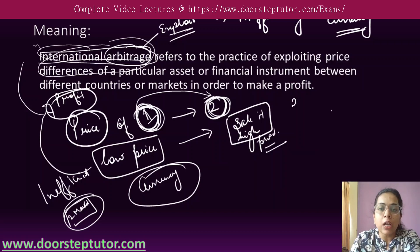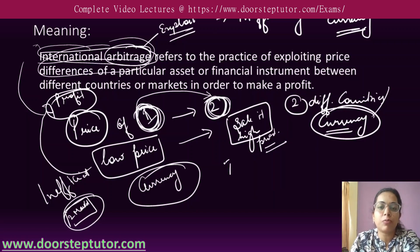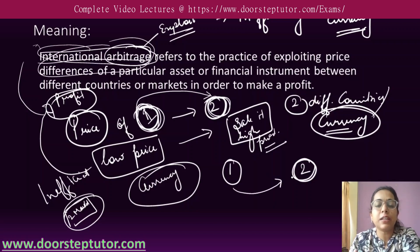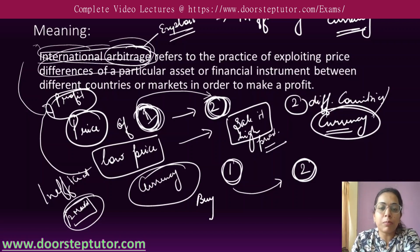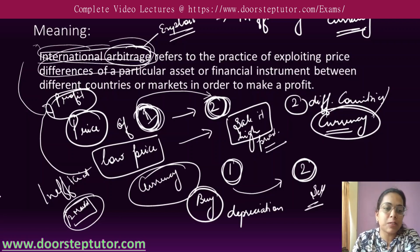International arbitrage is a practice where you exploit two different countries or currencies — there is a price differentiation between the exchange rate of one currency, and the same currency provides a different value in a different country. You buy the currency where there is depreciation and sell it where there is appreciation.